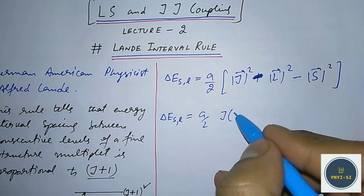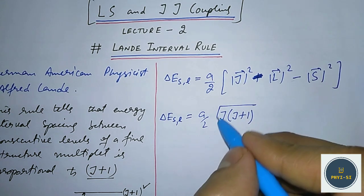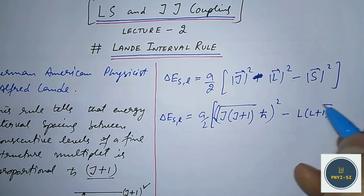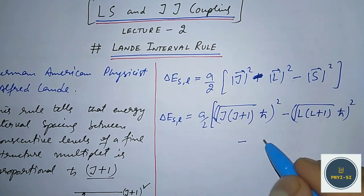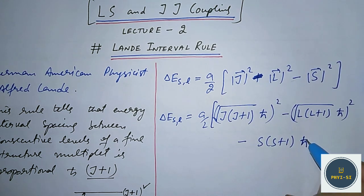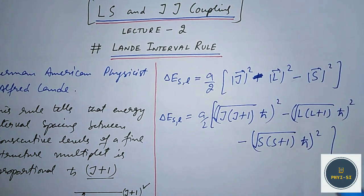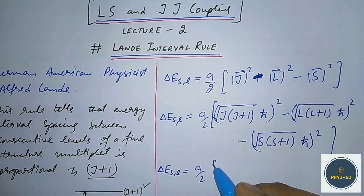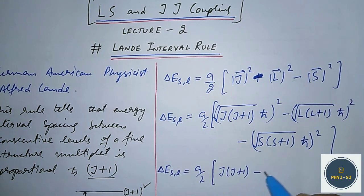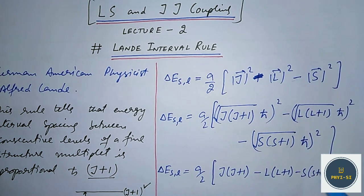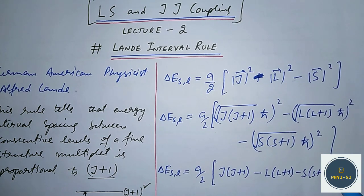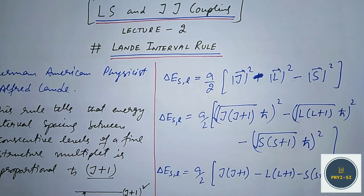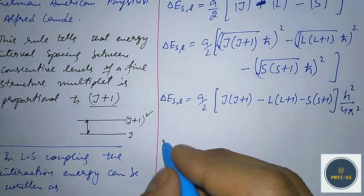Writing out the magnitudes, the squared magnitudes become J(J+1)ℏ², L(L+1)ℏ², and S(S+1)ℏ² respectively. So simplifying, ΔE_SL = (A/2) × [J(J+1) − L(L+1) − S(S+1)] times the ℏ² constant.